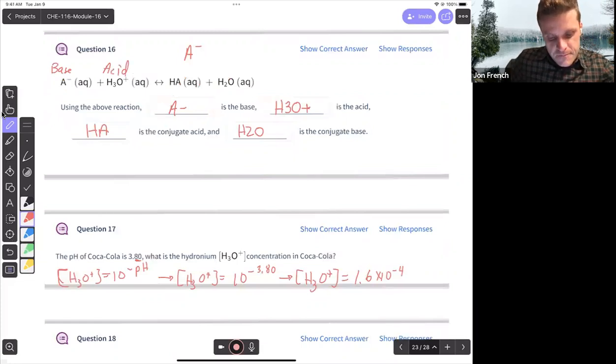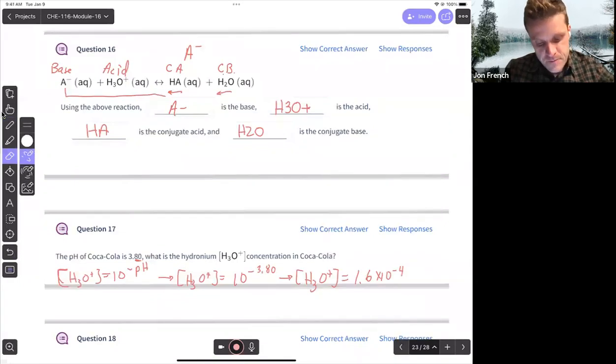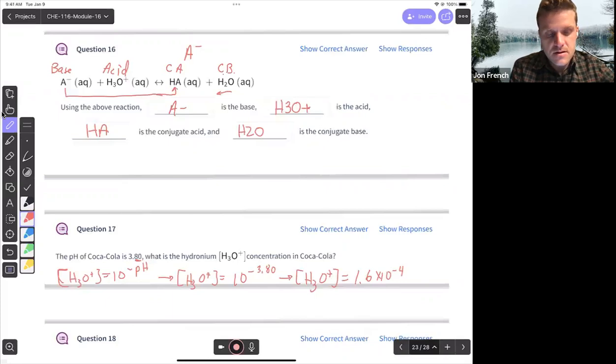Hydronium is our acid because it donates a proton. It goes from hydronium to water. And so, that makes, if A minus is our base, I guess it would help if I wrote these things out. And this is our acid. That makes HA our conjugate acid. And that would make water our conjugate base because in the reverse direction, HA is going to donate a proton behaving like an acid. In the reverse direction, water is going to gain a proton acting like a base.